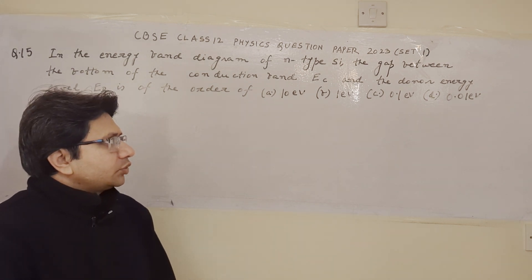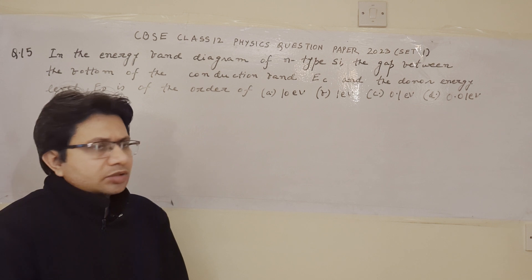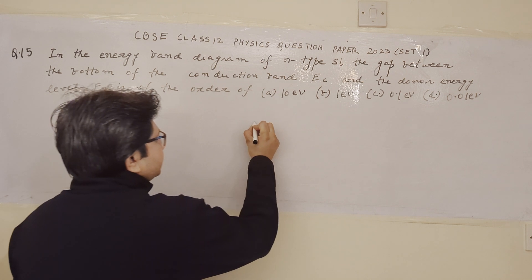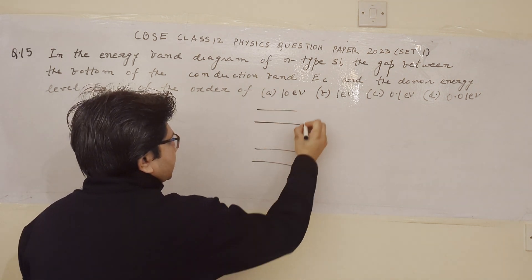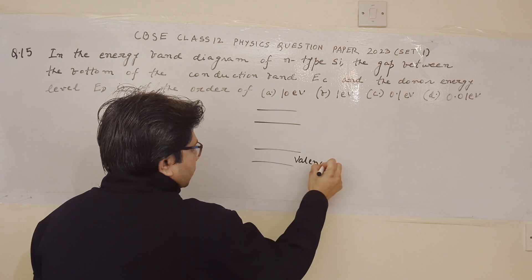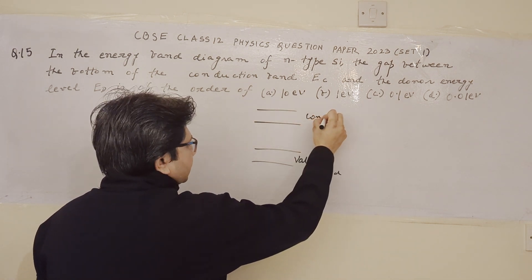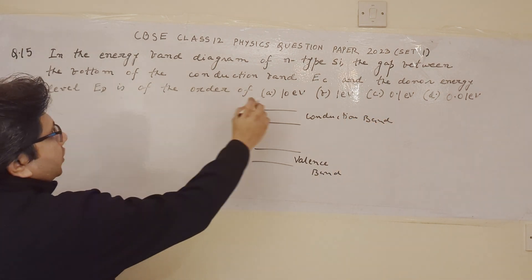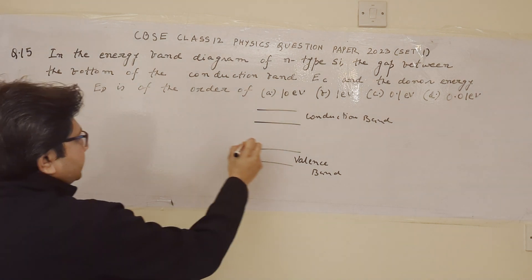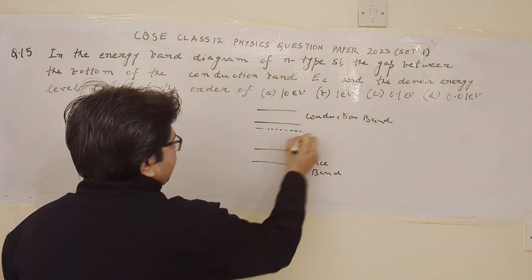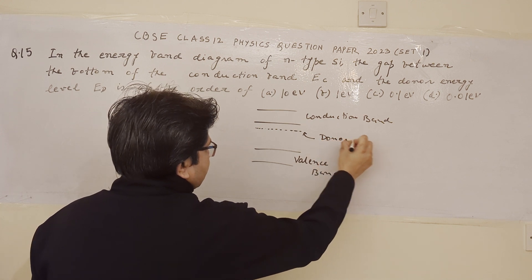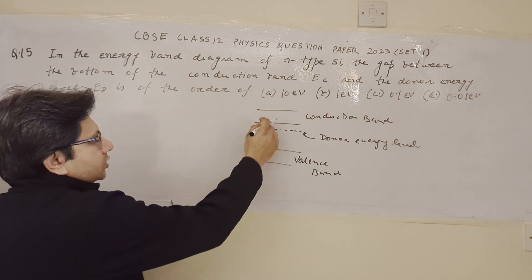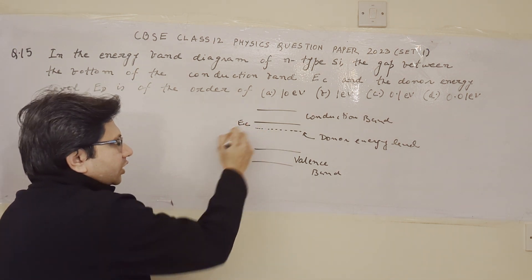This problem is based on the topic of semiconductor electronics, in particular the energy band diagram in the case of donor impurity addition. There are two bands — the lower one is the valence band and the upper one is known as the conduction band. There is also a donor energy level, and we know that the donor energy level lies just below the lower level of the conduction band.